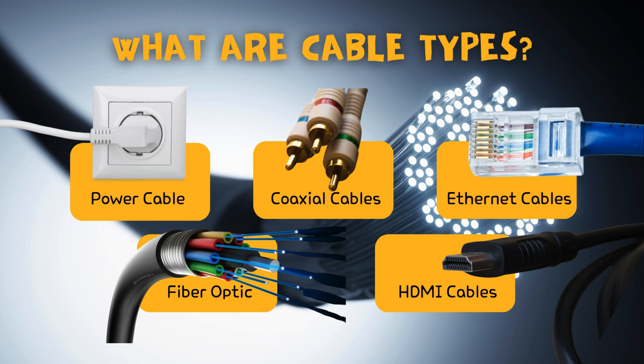1. Power cables. Power cables are designed to transmit electrical power from one point to another. They are commonly used in residential, commercial, and industrial settings to deliver electricity. Power cables are constructed with conductors made of copper or aluminum, which are encased in insulation materials such as PVC, XLPE, or EPR. These cables may also have protective jackets to ensure durability and safety.